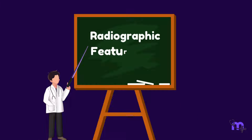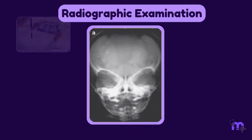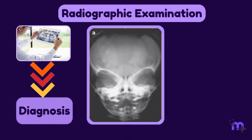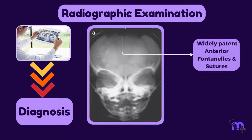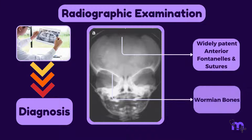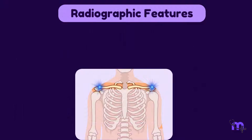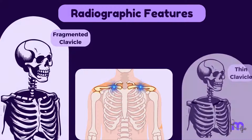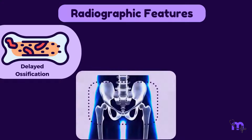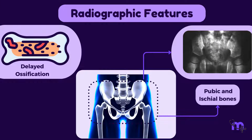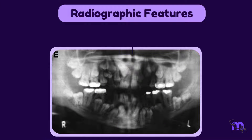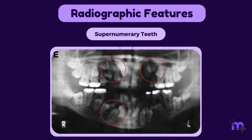Radiographic examination plays an important role in the diagnosis of cleidocranial dysplasia, as the images reveal widely patent anterior fontanels and sutures along with wormian bones in the skull. The clavicles may appear as fragmented or thin structures. Delayed ossification of the pelvic bones, such as the pubic and ischial bones, is frequently observed. Radiographic examination often also reveals the presence of supernumerary teeth and other dental anomalies.